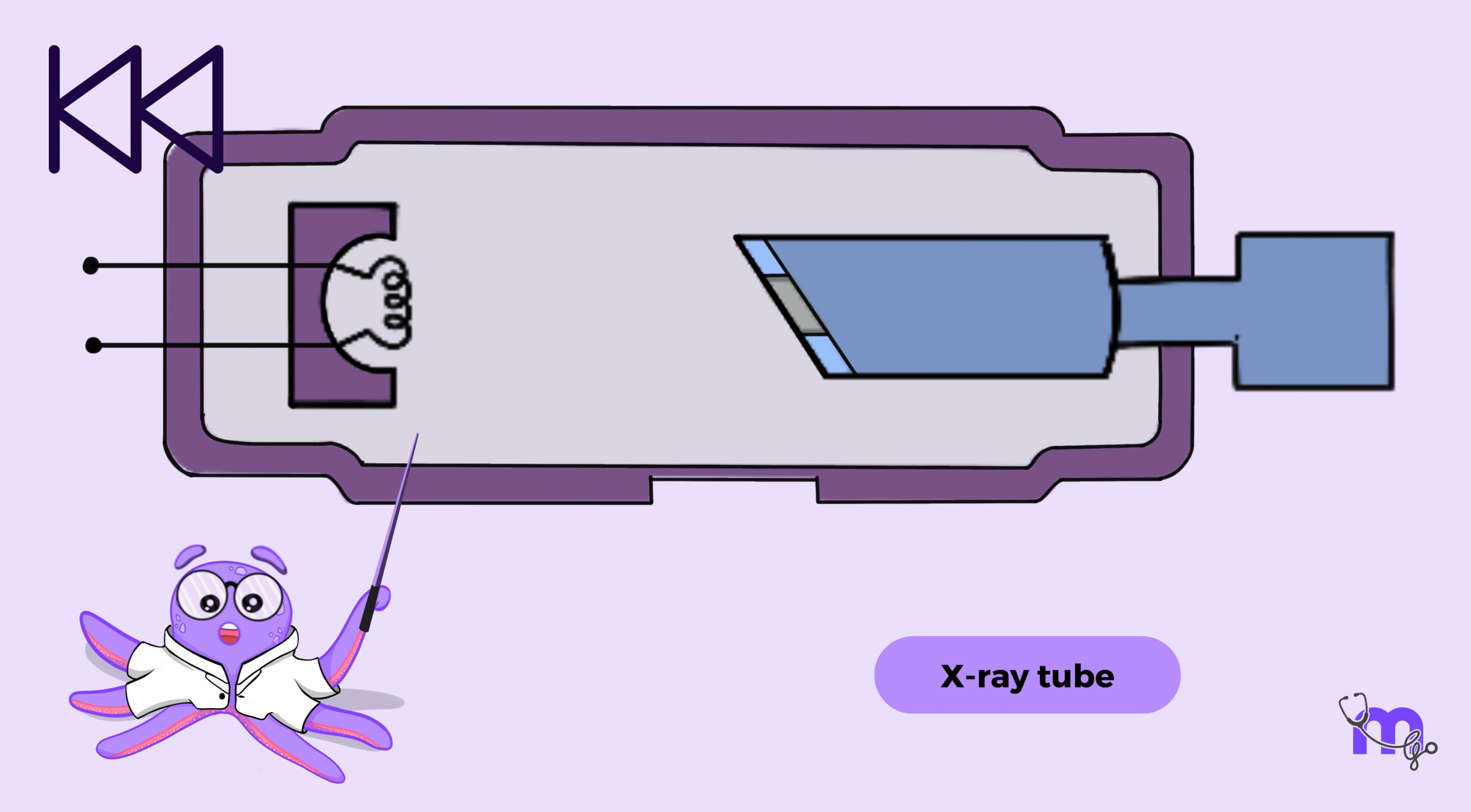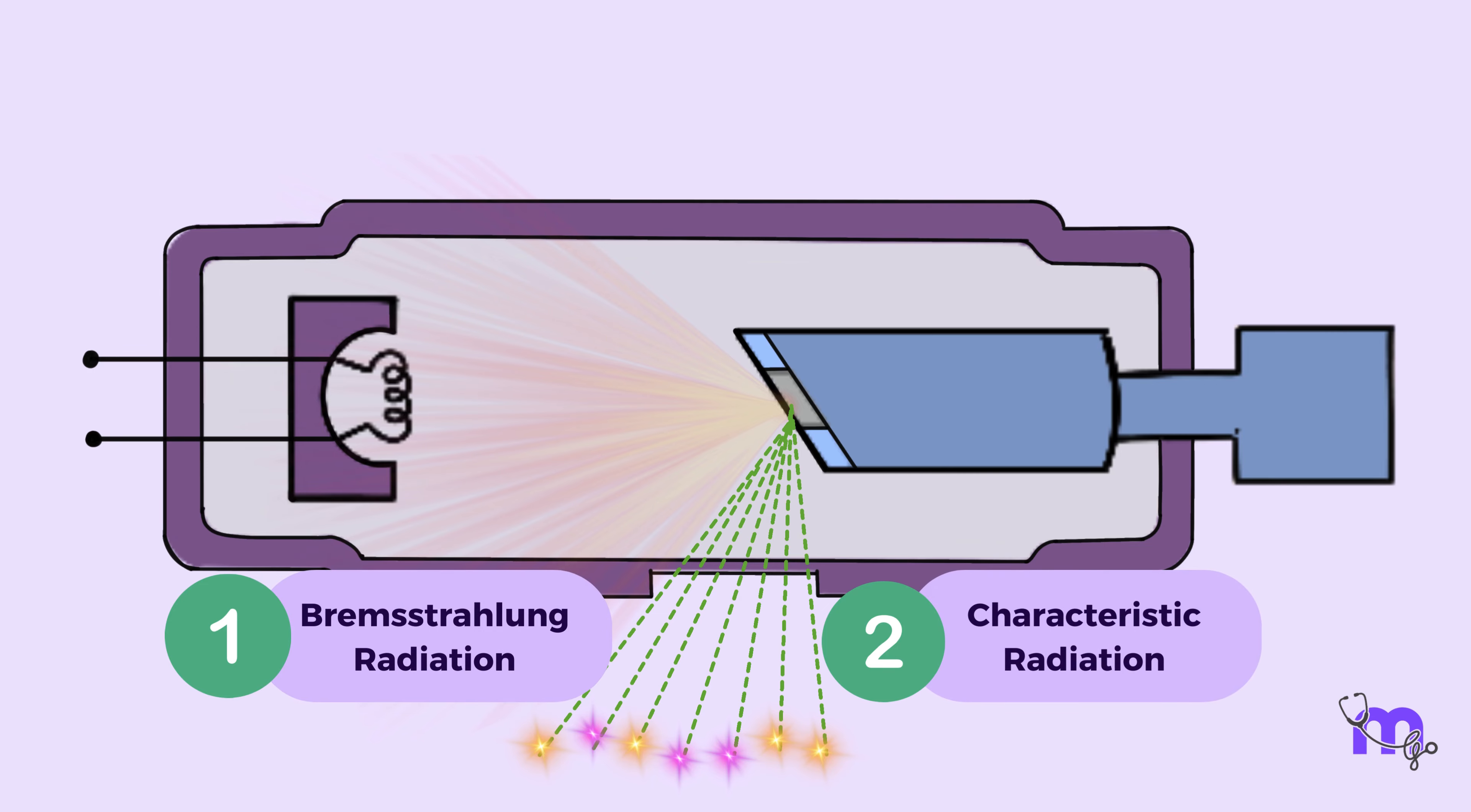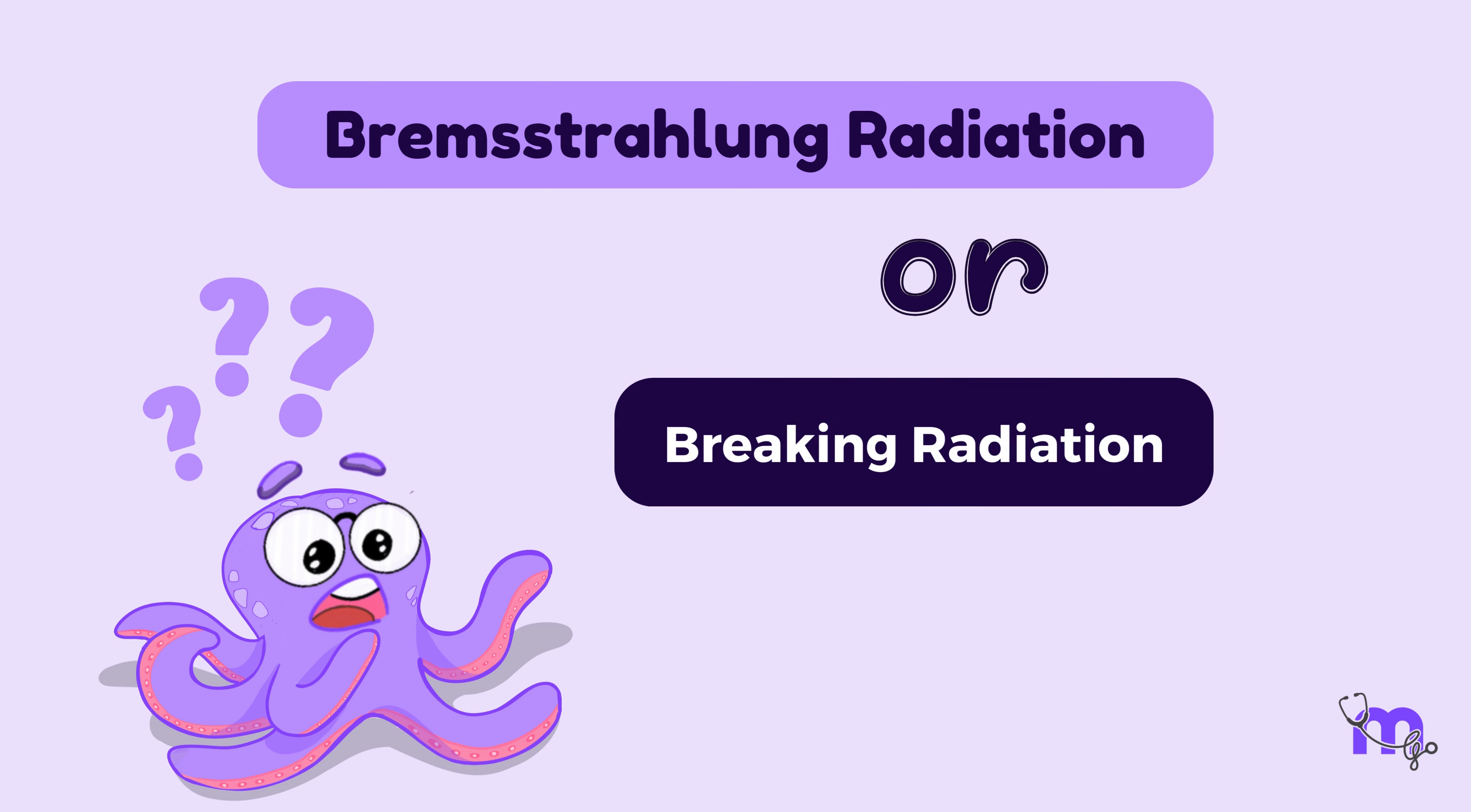In our previous videos of the x-ray tube, we have already learnt how X-rays are produced when high-speed electrons coming from the cathode collide with the atoms of the target anode, made of tungsten. This collision can occur in two mechanisms, thereby giving rise to two types of X-radiation, the bremsstrahlung radiation and the characteristic radiation.